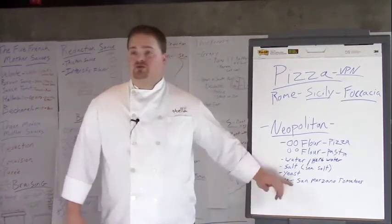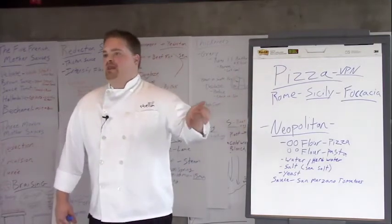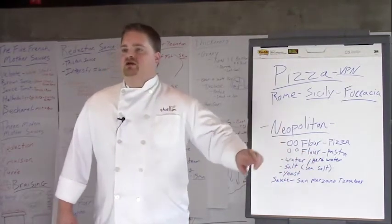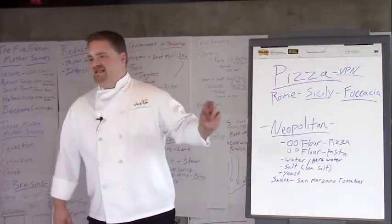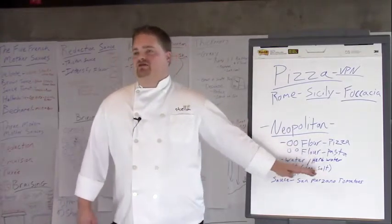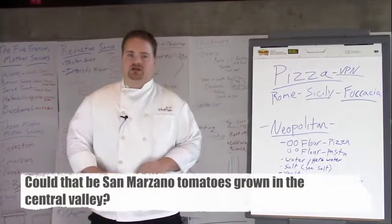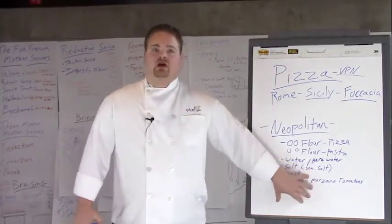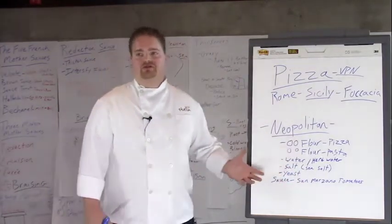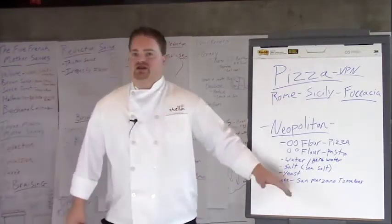Some other regulations: you can only burn hardwood — specifically oak. Your San Marzano tomato sauce has to be raw when it goes on the pizza; it can't be cooked. Your pizza has to cook within 45 to 90 seconds, and the floor of your pizza oven has to be at least 750 degrees Fahrenheit. The San Marzano tomatoes have to be from the San Marzano region of Italy.